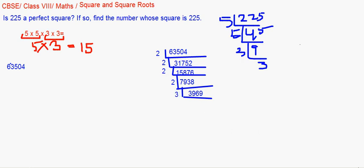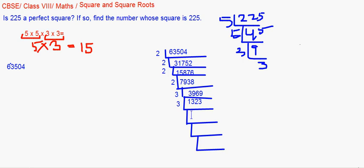Continuing the prime factorization: dividing 3969 by 3 gives 1323; dividing by 3 again gives 441. Then 441 divided by 3 gives 147. We can see 147 is divisible by 7, giving 21, which is again divisible by 7, leaving 3.